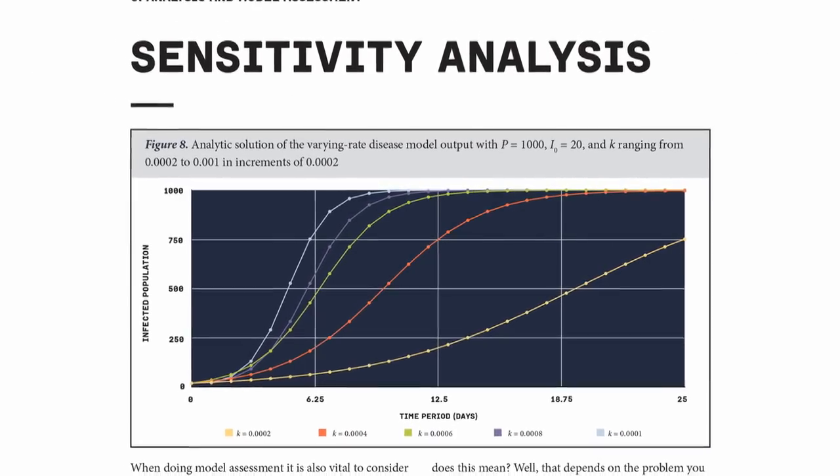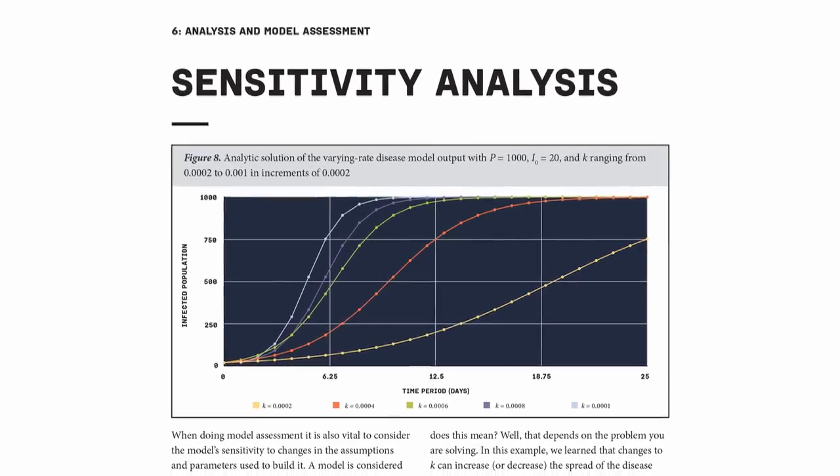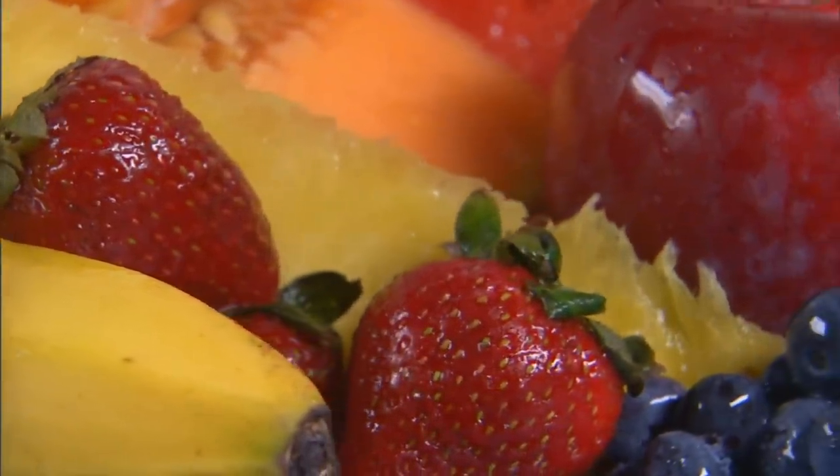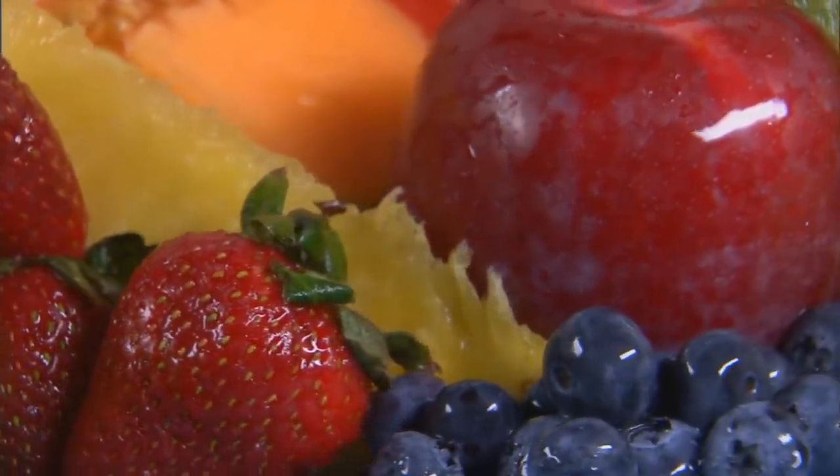Another vital step in model assessment is to analyze how changes in assumptions and parameters affect the model's output. For example, in a model predicting the cost of a school lunch, does a minor change in the cost of fruit have a small or large impact on the total? I've assumed fruit costs this much, but I don't really know that's true year-round. If I make that number a little bigger or smaller, does the total cost change a little — or wildly?